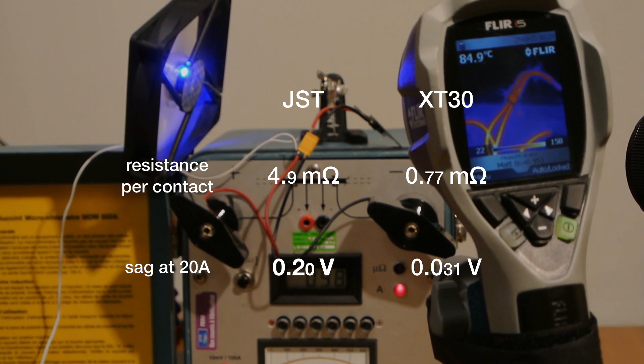At 20 amps, the resistance in the JST will cause a voltage drop of 0.2 volts just across the connector itself, so that's quite a significant sag.